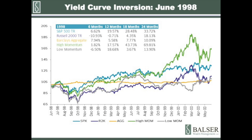In June of 1998, the market sold off because of the currency crisis. Like a lot of the yield curve inversion instances, it's really tough to determine how much the inversion played a part in the correction. But like the observation in 1978, the market rebounded quickly and we didn't suffer a long-term bear market. There was a big laggard rally once the correction ended, which is similar to what we saw at the end of 2018. Once the market bottomed, the forward returns were very strong.